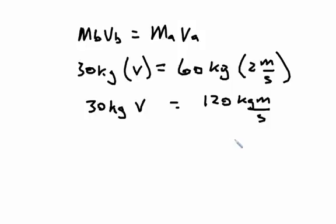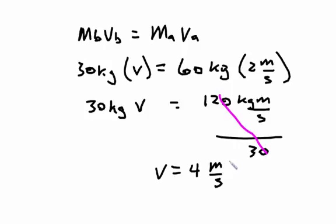Since we don't know his velocity, we have to divide by thirty on both sides of the equal sign. Since 120 divided by thirty is four, that means the man with half the mass moved away at four meters per second, or double the other's speed. Momentum is conserved.